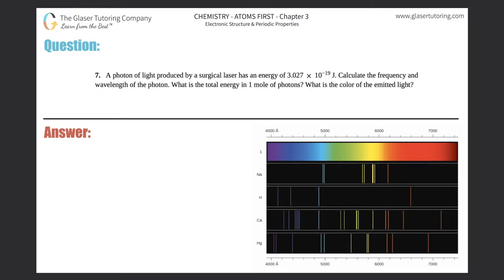Number seven, a photon of light produced by a surgical laser has an energy of 3.027 times 10 to the negative 19th joules. Calculate the frequency and wavelength of the photon. What is the total energy in one mole of photon? And what is the color of the emitted light? Alright, so we've got four different questions here. Let's get started.